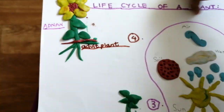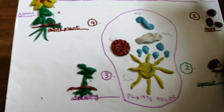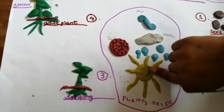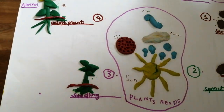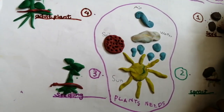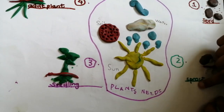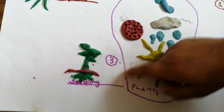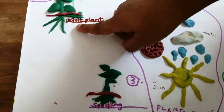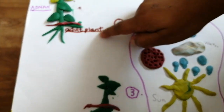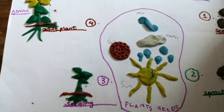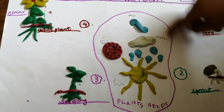Four stages. So we learn this. One is seed, two is sprout, three is seedling, and next is adult plant — four stages. Now we will learn this.